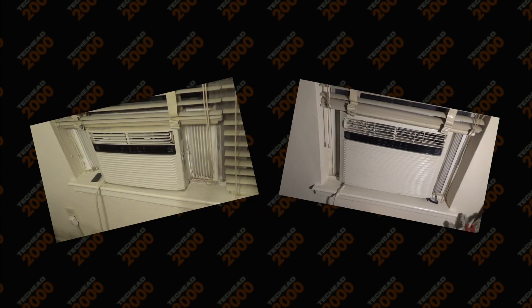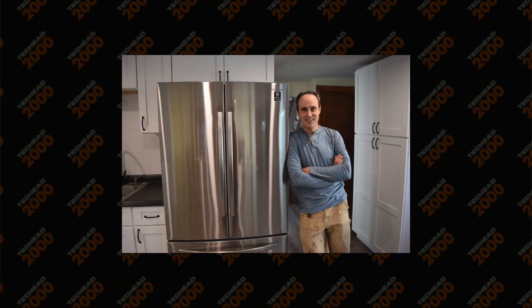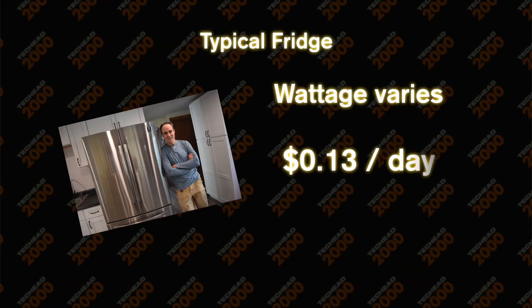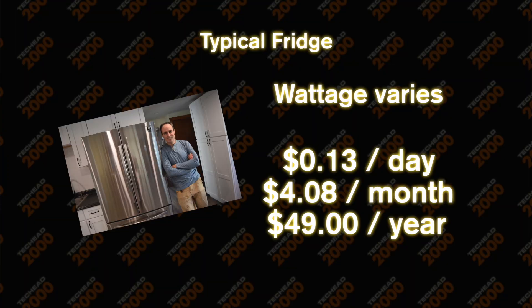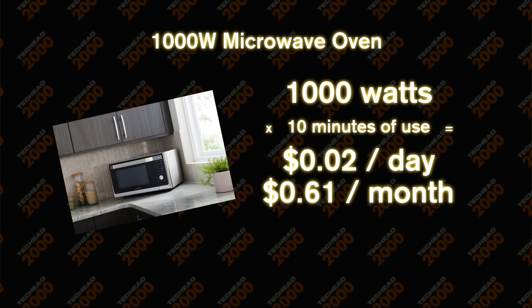I have two window units where I live, and both use much more power than the basic one I'm talking about here. I can say with complete confidence that during the summertime, over 90% of my utility bill is those AC units. Fridges are kind of like TVs — wattage can vary drastically based on how big it is, how old it is, and how warm the kitchen is. Based on my research, they use around $0.13 per day, $4.08 a month, and $49 a year. As for microwaves, assuming a 1,000 watt microwave used for about 10 minutes per day, it costs only 2 cents per day, $0.61 a month, and $7.31 a year.